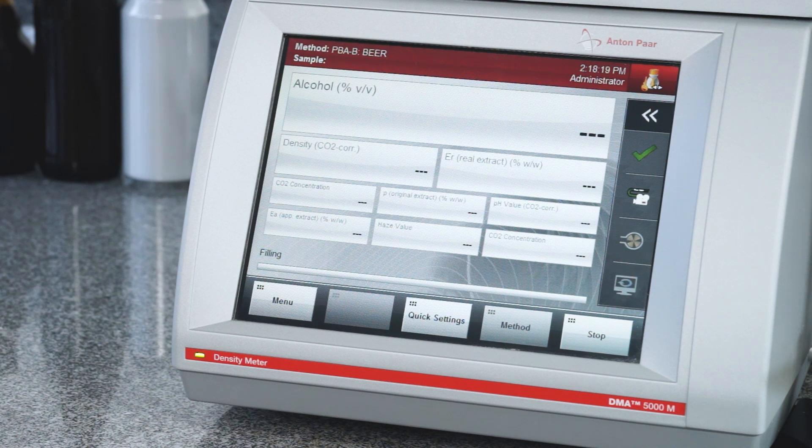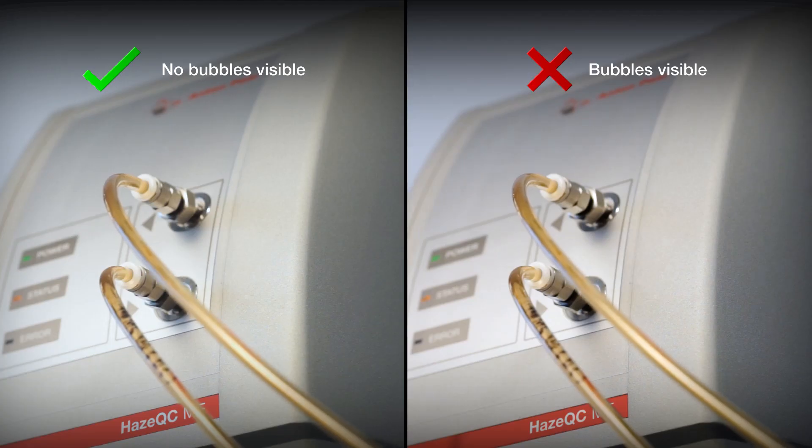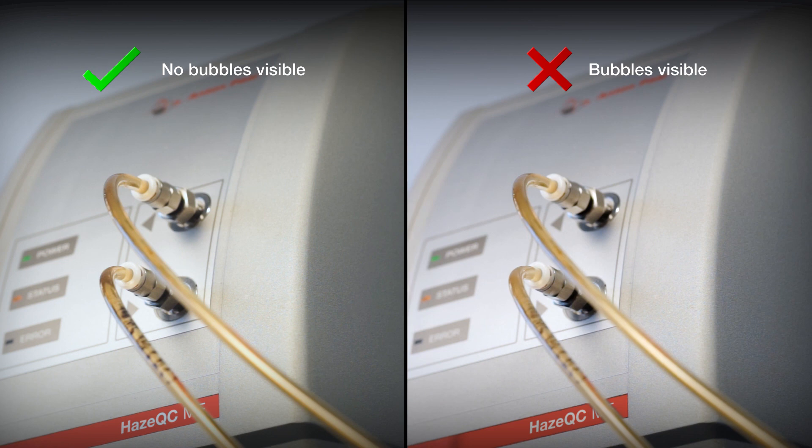The sample is transferred automatically from the container to all measuring cells. While filling, gas bubbles should not be continuously visible in the hoses. In case there are, please see the instruction manual for further steps.